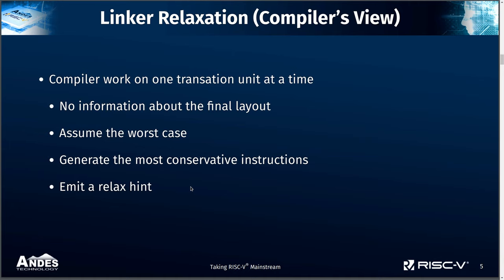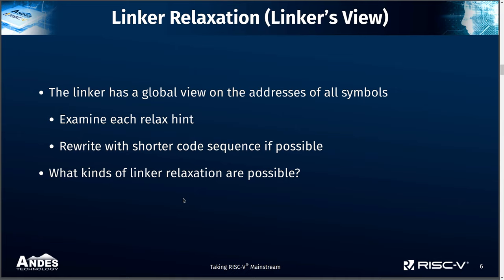The case for linker relaxation is that from the compiler's view, since it only works on one translation unit at a time, it has no information about the final layout of functions and data. So it has to assume the worst case by generating the most conservative instructions. And it can also emit a relaxation hint to tell the linker that it is possible to rewrite this with a shorter code sequence.